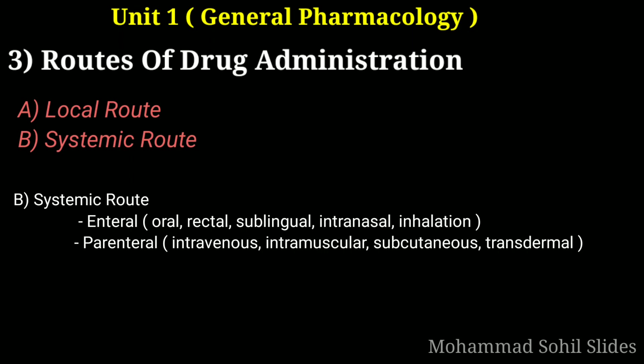Now first we will see local route. Drugs are administered at the site of lesion under local route. This route can only be used for localized lesions at accessible sites and for drugs whose systemic absorption from this site is minimal or absent. Local route includes topical, deeper tissue, and arterial supply. Topical refers to external application of drug to the surface of localization — for example, skin and mucous membranes, including mouth, pharynx, eyes, ear, nose, GIT, respiratory tract, vagina, etc.